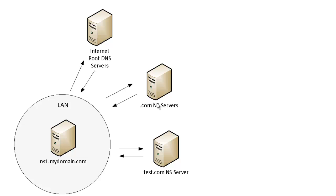Step 3 goes to the .com servers and asks for the test.com zone. The .com NS servers will respond back with the IP address of the test.com NS server. When your DNS server queries that test.com NS server, since this server is authoritative for that domain, it will respond with the answer. You'll notice that it took 1, 2, 3, 4, 5, 6 steps to retrieve this answer.